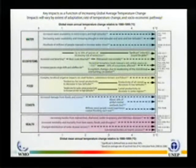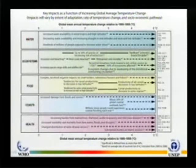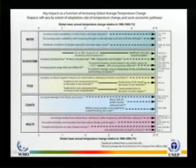So as you go from naught, one, two, three, four, five degrees above present — this is a global temperature — for the fields that we've been looking at: water, ecosystems, food, coasts, you can see the sort of impacts that are coming through. The references on the right are all the sources, don't worry about those.